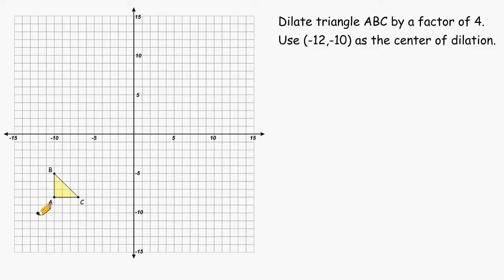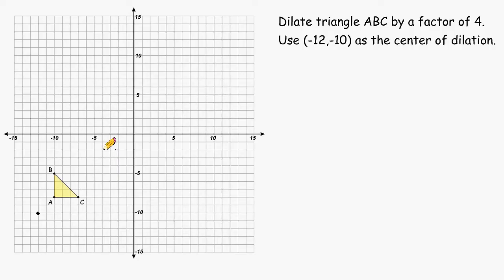Let's start by finding the distance of the center of dilation to point A. We would have to move 2 to the right in the x direction and 2 up in the y direction to get to point A. We would consider this distance a scale factor of 1, and we have to dilate this triangle by a factor of 4. So all we have to do is repeat the process of going over 2 and up 2, four times. So this point right here will be the new location of point A.